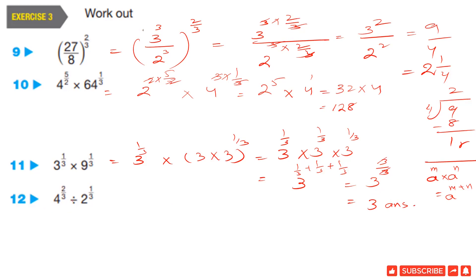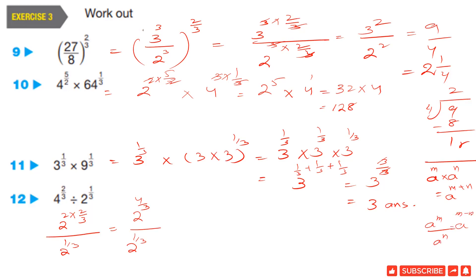Question 12: 4 power 2 by 3 divided by 2 power 1 by 3. Since 4 is 2 square, we write 2 power 2, whole power 2 by 3, divided by 2 power 1 by 3. That gives 2 power 4 by 3 divided by 2 power 1 by 3. Using the second law of indices — A power M upon A power N equals A power M minus N — we get 2 power (4 by 3 minus 1 by 3), which is 2 power 3 by 3. The threes cancel giving 2 power 1, so the answer is 2.